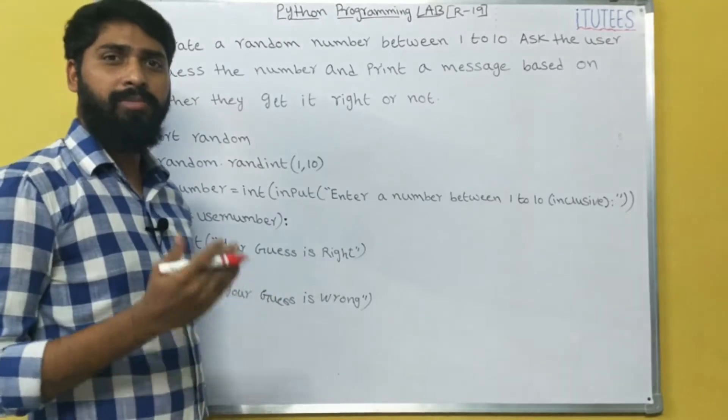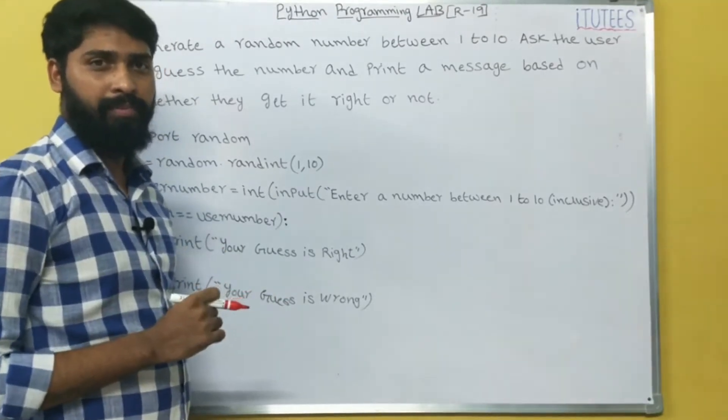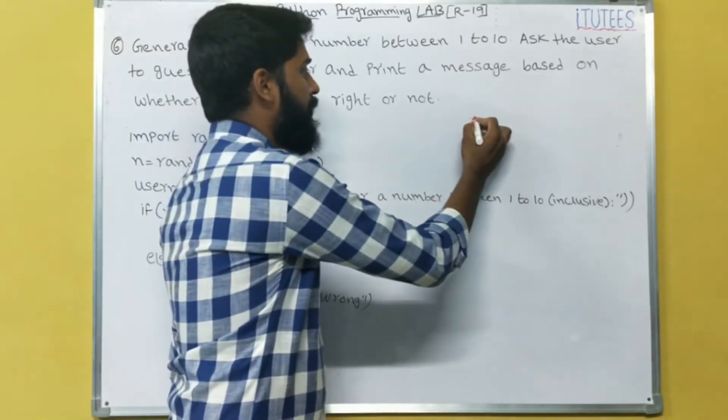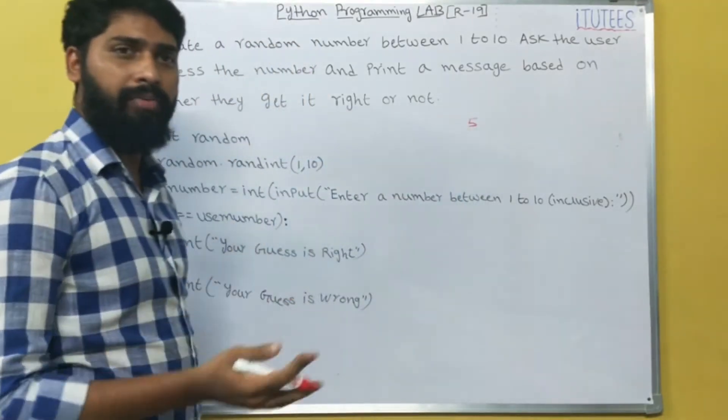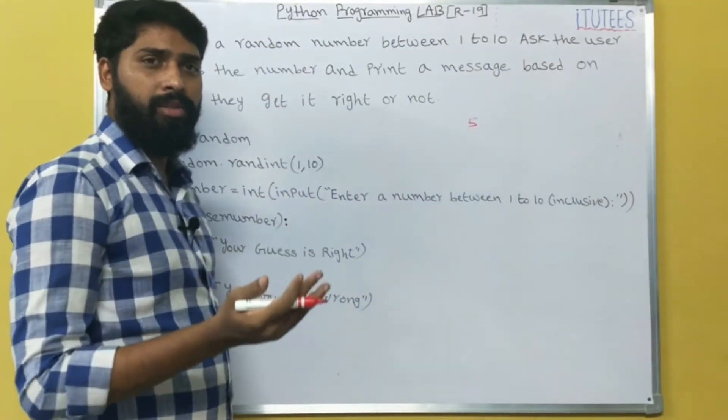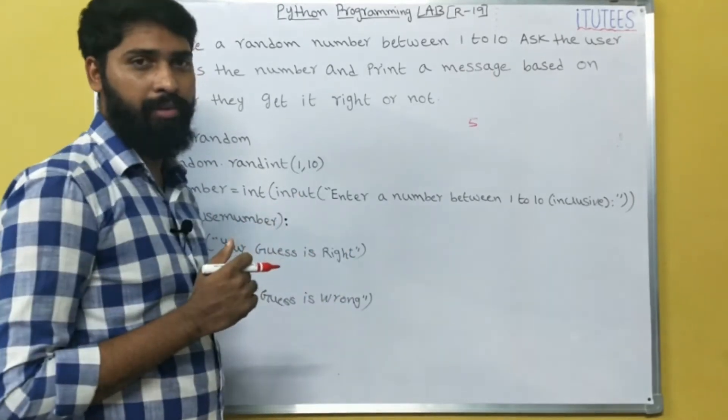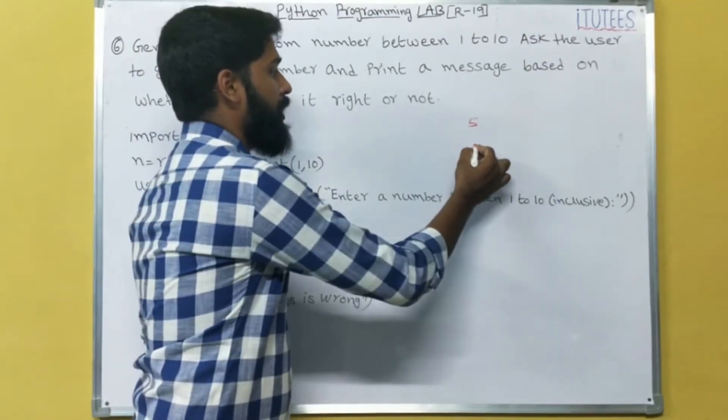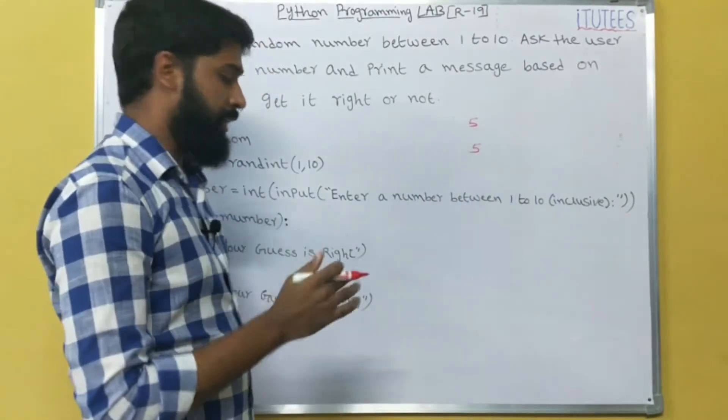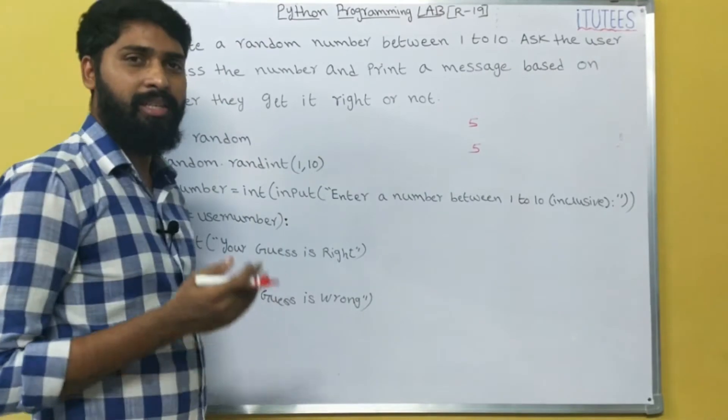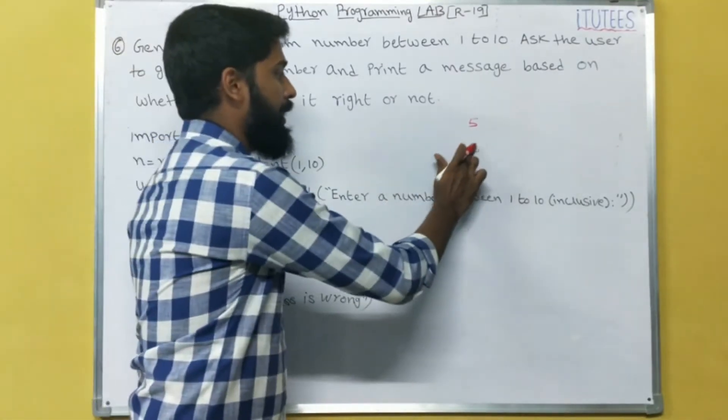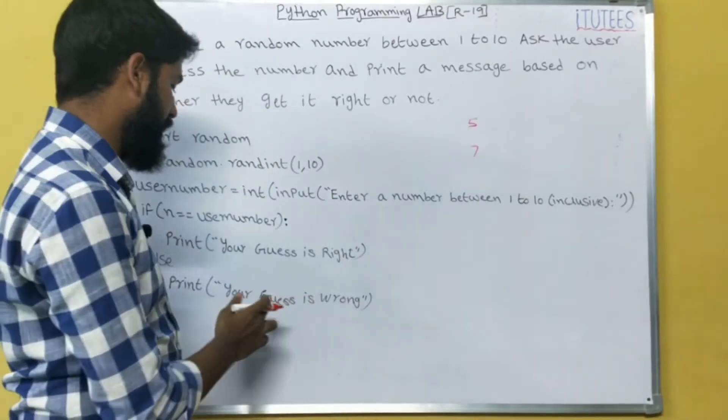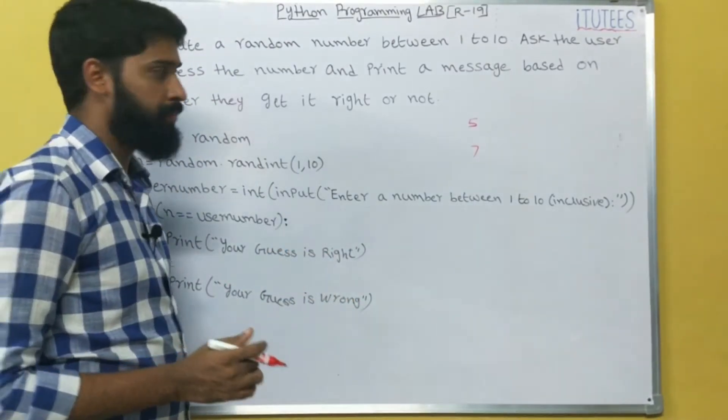So that means the system generates a random number between 1 to 10. For example, generate 5. After that it asks the user to enter a number between 1 to 10 inclusive. Then user enters 5, it displays your guess is right. If the user enters 7 instead of 5, then it returns your guess is wrong.